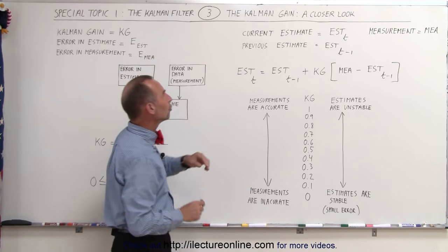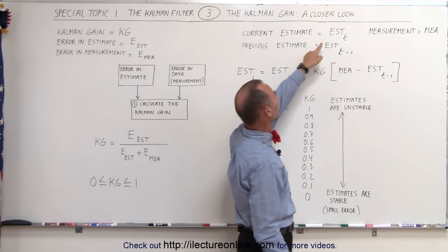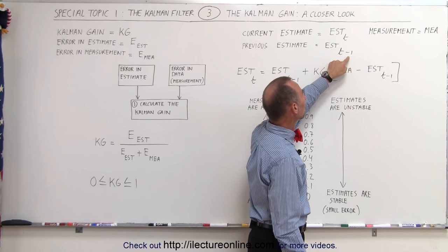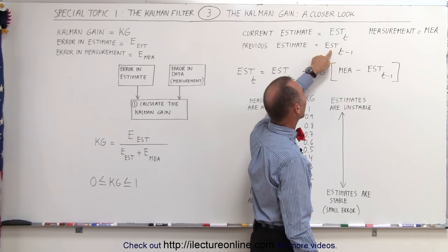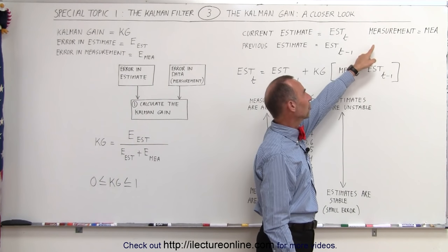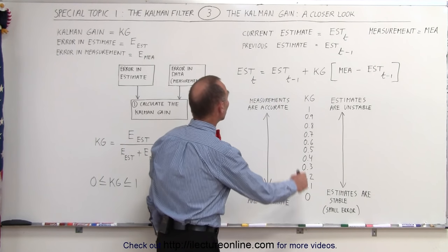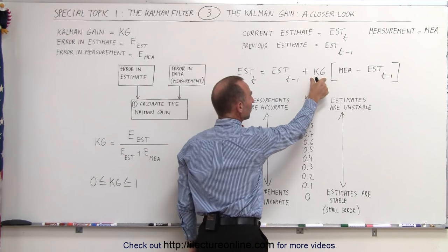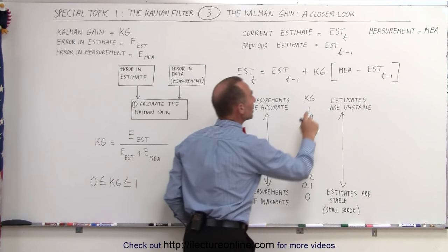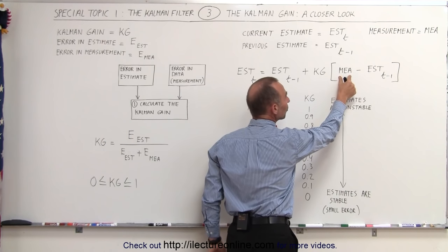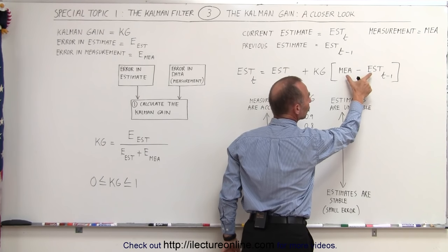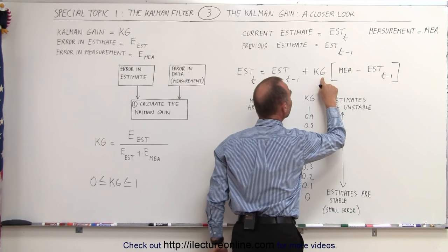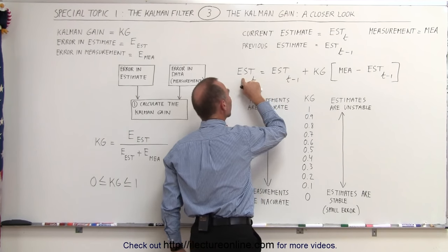How is the Kalman gain used? If we say the current estimate is EST_T and the previous estimate is EST_(T-1), and measurement is abbreviated MEA, then the current estimate is equal to the previous estimate plus the Kalman gain — that number between 0 and 1 — times the difference between the new measurement and the previous estimate. That difference gets multiplied by the Kalman gain and added to the previous estimate to give us the current estimate.